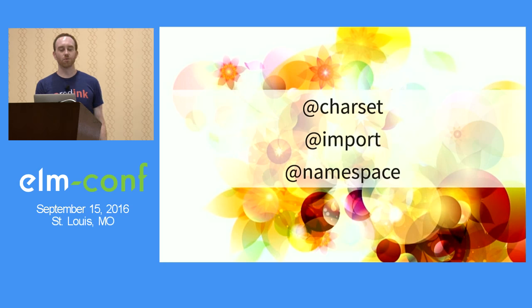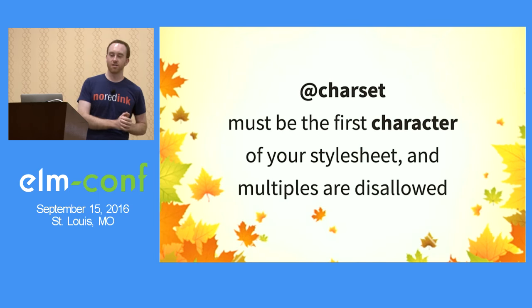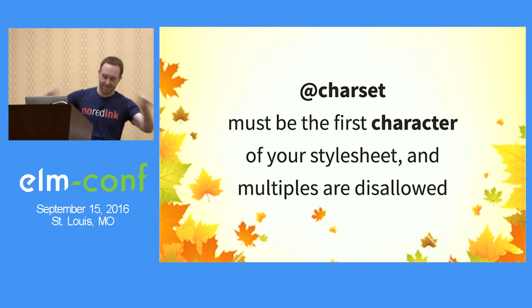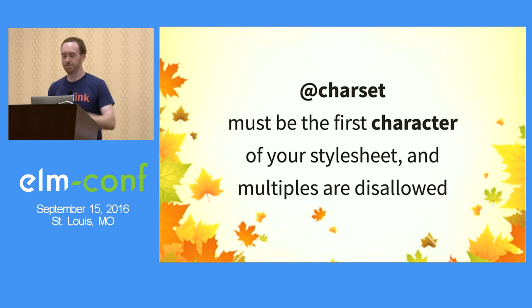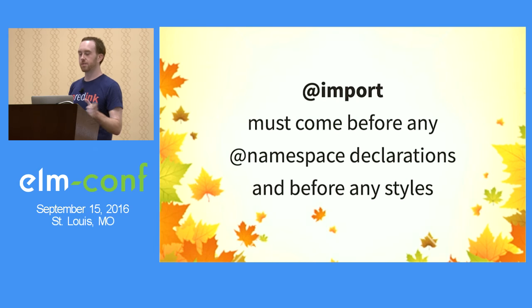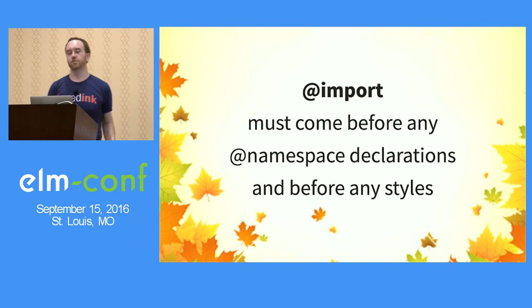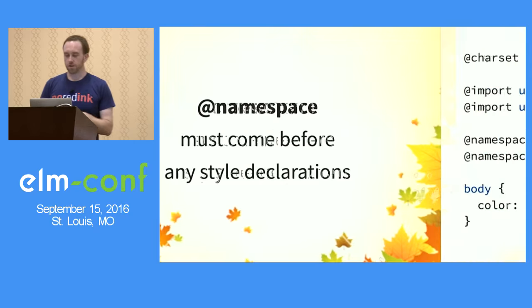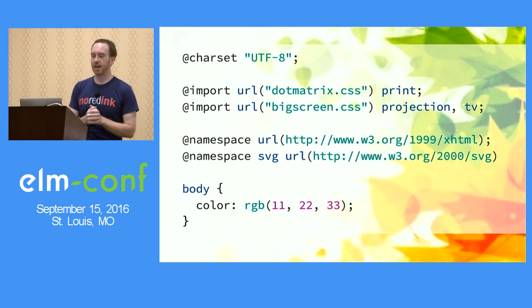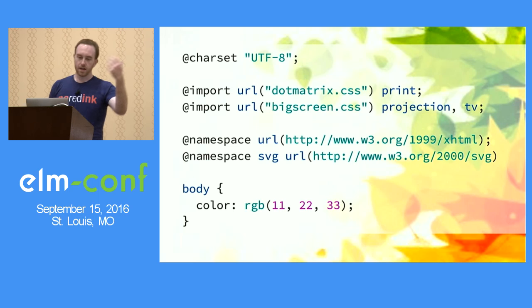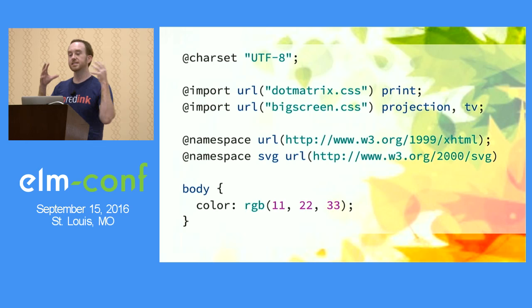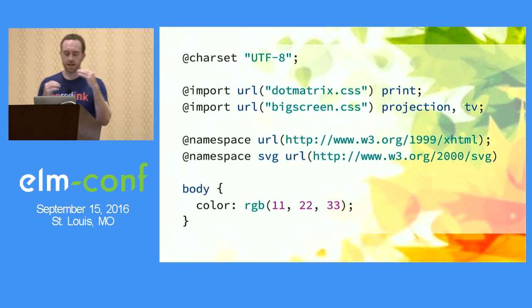Let's go over some quick rules — there might be some surprises. Charset must be the very first character of your style sheet, and multiples are disallowed. If you say @charset and there is so much as a newline in front of it, that's an invalid style sheet. Import must be done before any @namespace declarations and before any style declarations, but after @charset. So the order is: charset first, then imports, then namespace — which must be after import and after charset — but before any style declarations. These things have to be grouped this way; that's the only way to get a valid CSS style sheet using all of these.